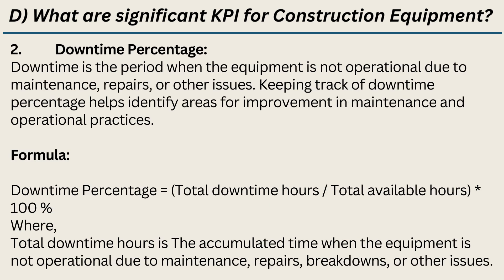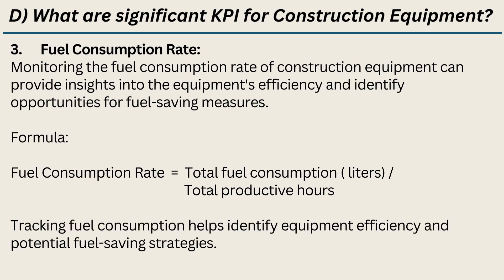2. Downtime percentage — Downtime is the period when the equipment is not operational due to maintenance, repairs, or other issues. Keeping track of downtime percentage helps identify areas for improvement in maintenance and operational practices. Formula: Downtime Percentage = (Total Downtime Hours / Total Available Hours) × 100. Total downtime hours is the accumulated time when the equipment is not operational due to maintenance, repairs, breakdowns, or other issues. 3. Fuel consumption rate — Monitoring the fuel consumption rate of construction equipment provides insights into the equipment's efficiency and identifies opportunities for fuel-saving measures. Formula: Fuel Consumption Rate = Total Fuel Consumption (liters) / Total Productive Hours. Tracking fuel consumption helps identify equipment efficiency and potential fuel-saving strategies.